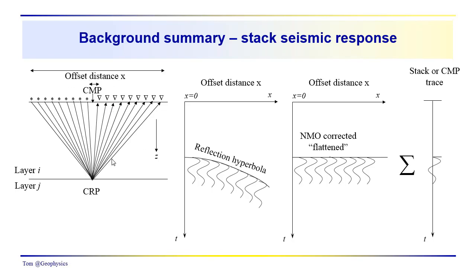Up until this point in time, we've been talking about data in this format, and we've assumed some general understanding of common midpoint data processing. As a brief background, here is an ideal conceptualization of a common midpoint gather. We have sources and receivers on opposite sides, equally spaced from a midpoint. This common midpoint may be a common reflection point between layers I and J if the layer is flat, but if the layer is dipping, these reflection points may walk up dip and have to be corrected.